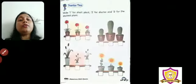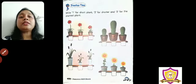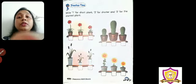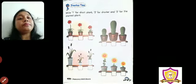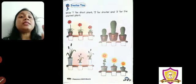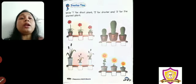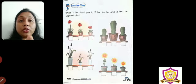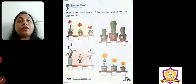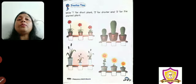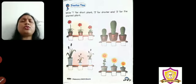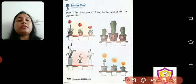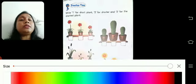Now if you turn the page, you can see flower plants, cactus, and other things — all are there, right? The sizes are not the same. The instructions say: write 1 for the short plant, write 2 for the shorter plant, write 3 for the shortest plant. Short means the tallest among the group.